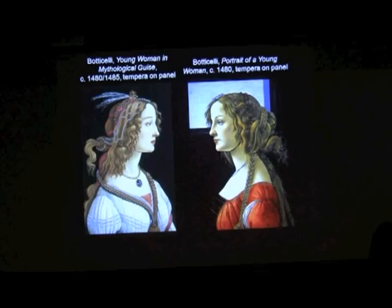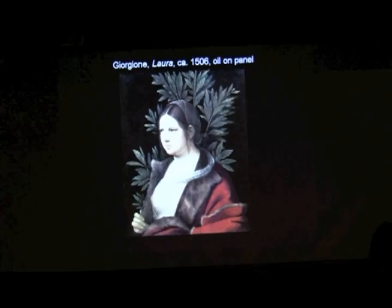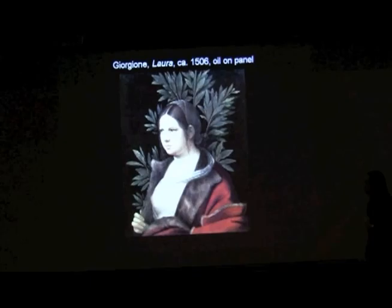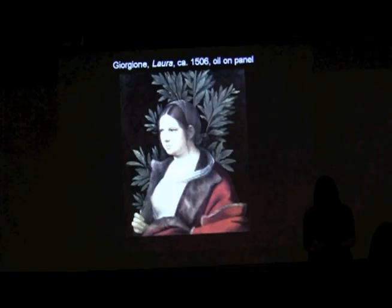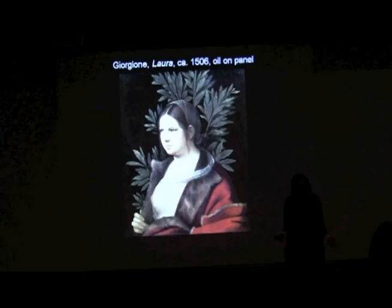Botticelli does these in the 15th century, and then in the early 16th century this category of ideal beauties becomes very popular in Venice — often called 'le belle,' which just means 'beautiful.' One of the most famous of these is Giorgione's Laura, named Laura.